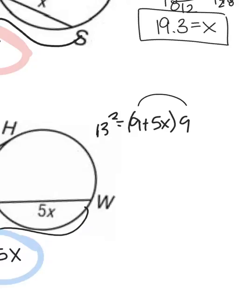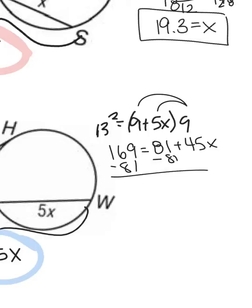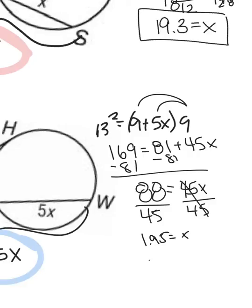I'm going to distribute inside my parentheses. 13 squared is 169 equals 81 plus 45X. Subtract 81 from both sides. I have 88 equals 45X. Then I'm going to divide by 45. When I divide by 45, I get 1.95 rounded to the tenth place. It means that 1.95 is actually going to round to 2.0. That's rounding to the tenth place.